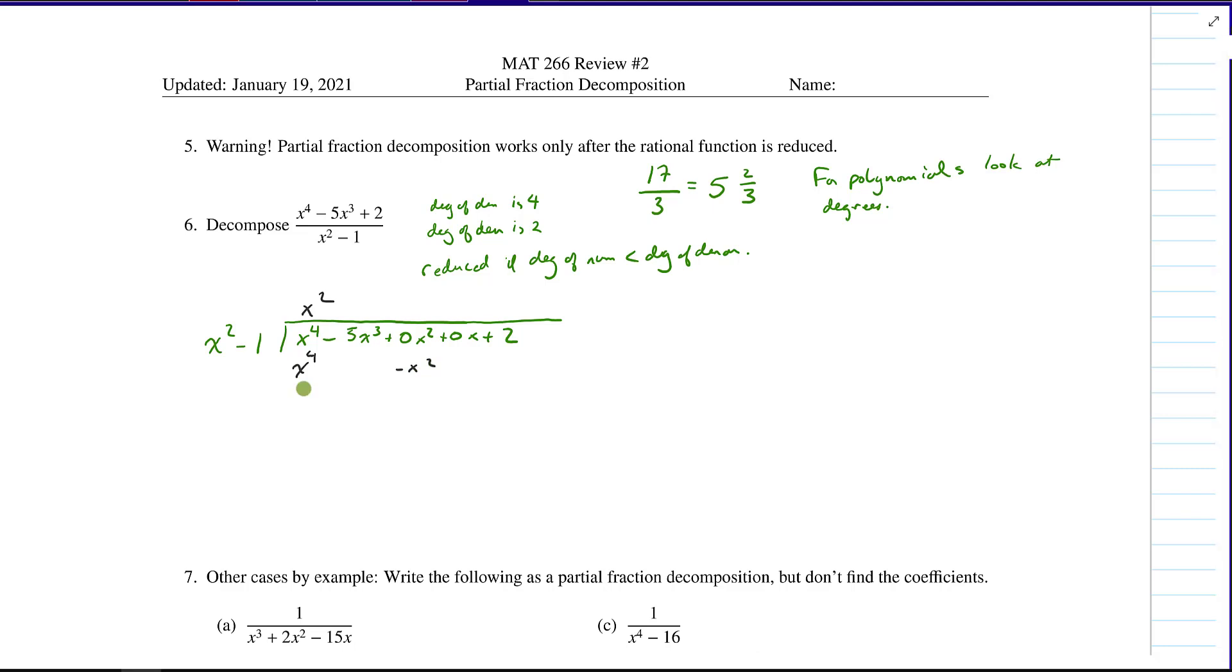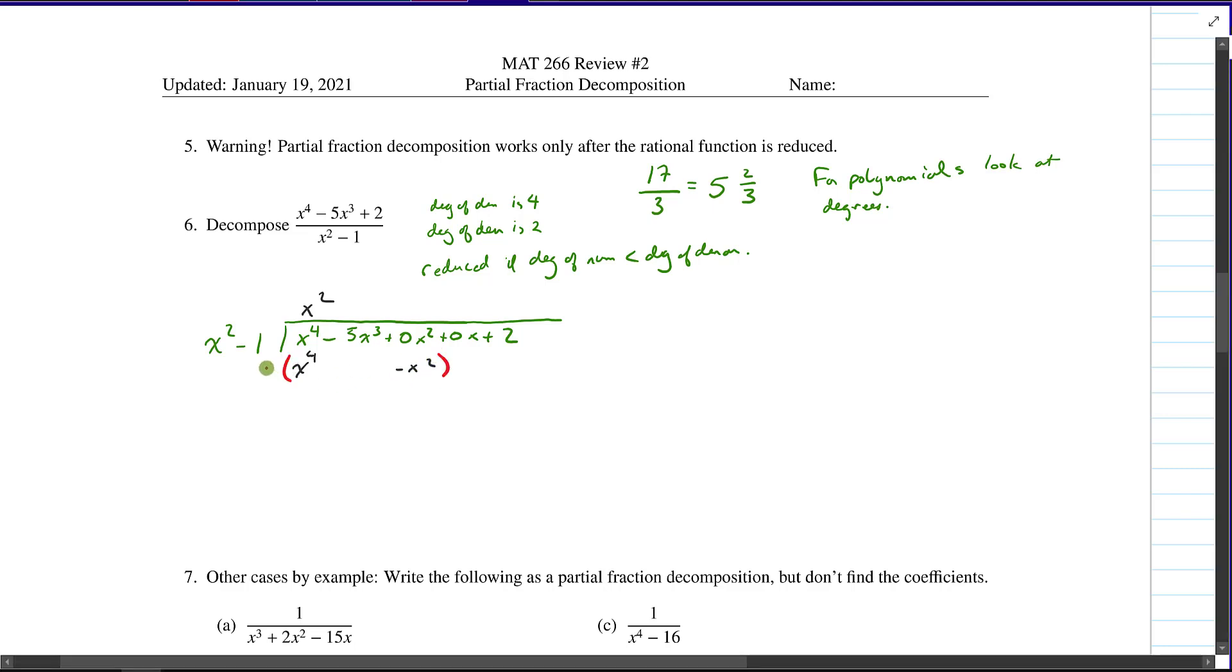And then this was the part where students always got into trouble. I'm then going to subtract this down and carry everything down. So we get minus 5x cubed plus x squared plus 0x plus 2. And then we say, OK, well, just like before, what do I need to multiply x squared by to make it look like negative 5x cubed or what I have here, negative 5x cubed?